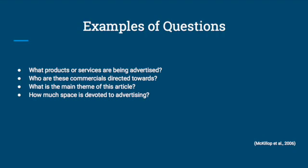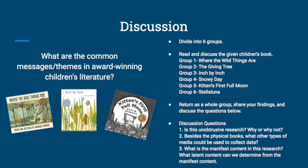The audience will need to break themselves into six groups. Each group will be reading and discussing an award-winning children's book. As you are reading, focus on the messages and themes presented in each story. Group one will read Where the Wild Things Are, group two The Giving Tree, group three Inch by Inch, group four Snowy Day, group five Kitten's First Full Moon, and group six Stella Luna. After reading and discussing in small groups, we will come back together as a whole group to share findings.